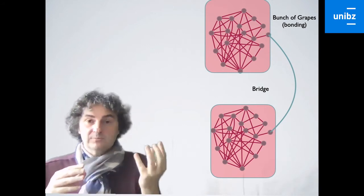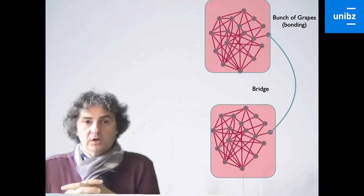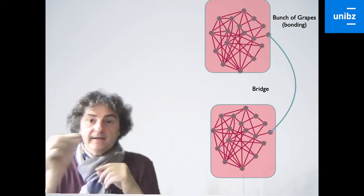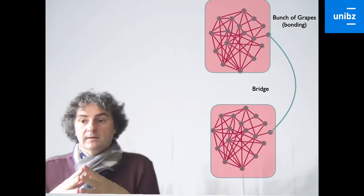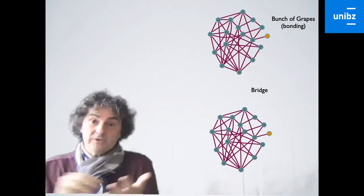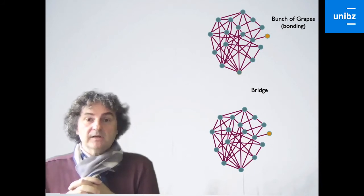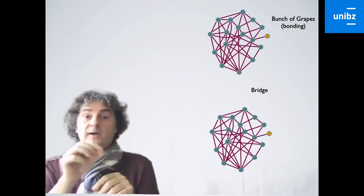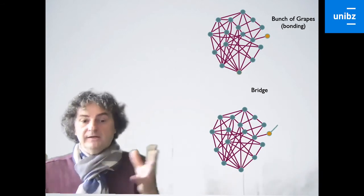So on one hand, we have this bunch of grapes where we have a lot of bonding relationships and everyone knows each other. And then we have these bridges. Which also means if you think about information, information can only spread out the whole world. While it spreads very quickly within the bunch, it can only spread throughout the world if we have a bridge to another bunch. And the same actually applies to viruses.